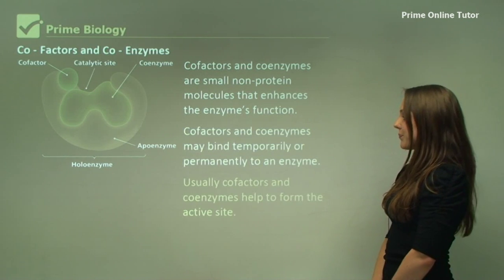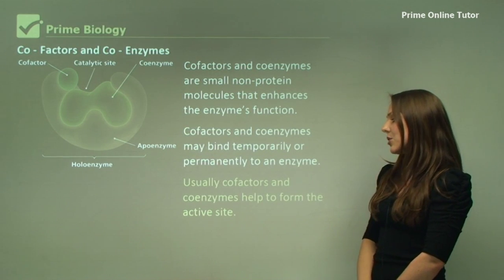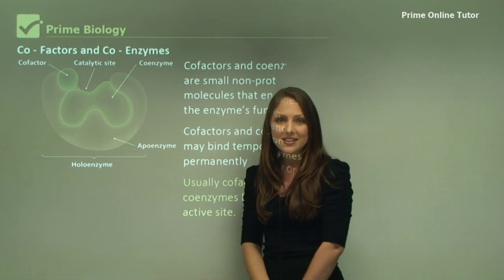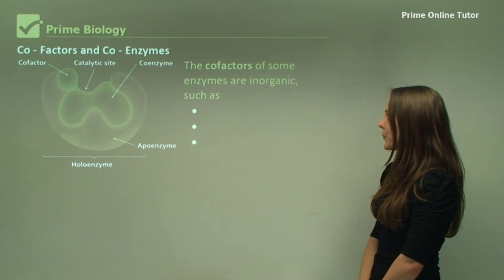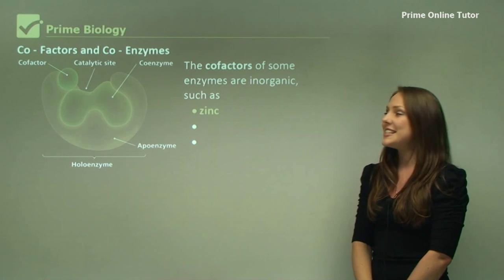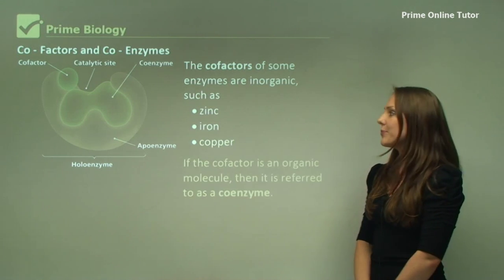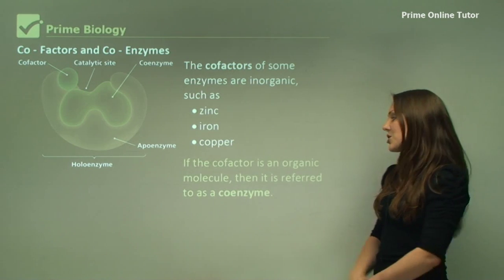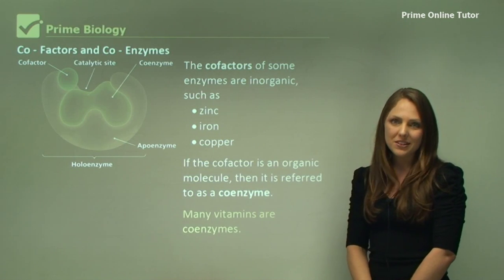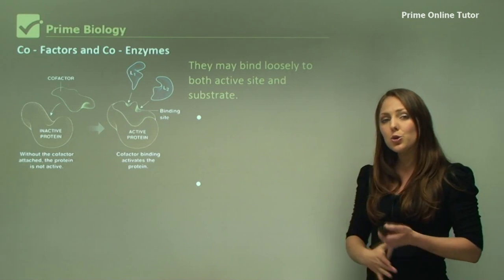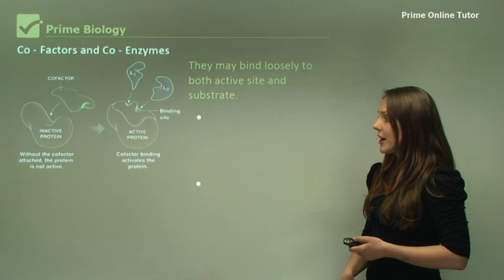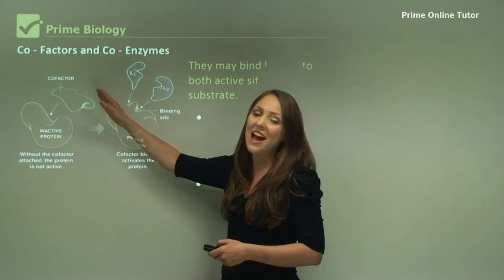Usually cofactors and coenzymes help to form the active site, however they can also bind to other sections of the enzyme. The cofactors of some enzymes are inorganic, and these include zinc, iron, or copper. If the cofactor is organic it is known as a coenzyme, and many vitamins are coenzymes. They may bind loosely to the active site.